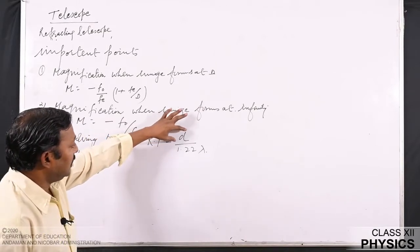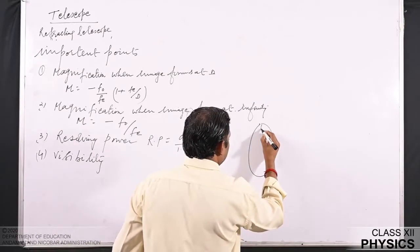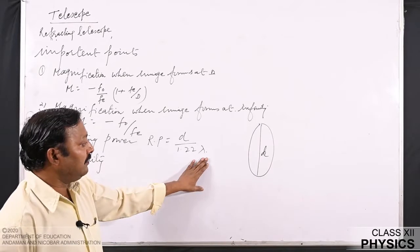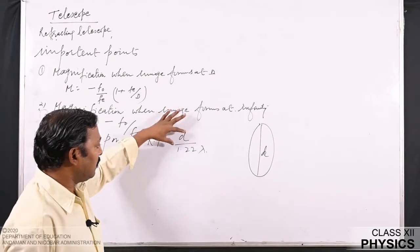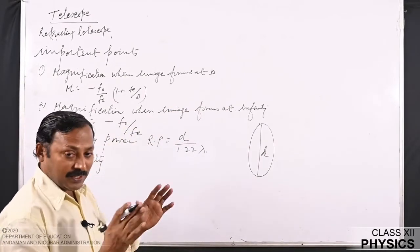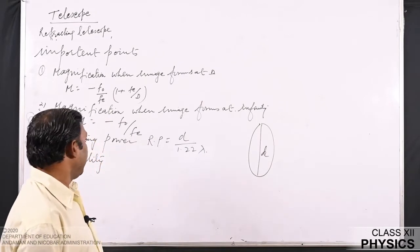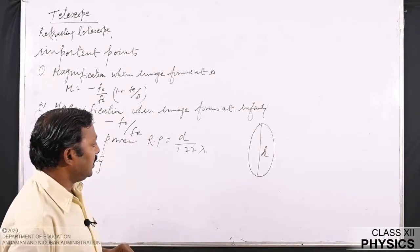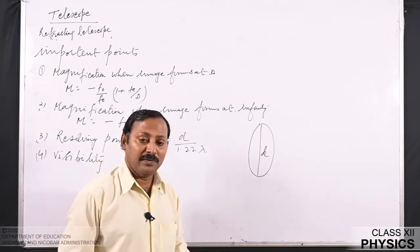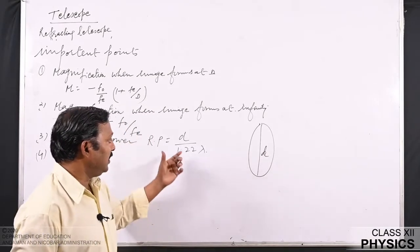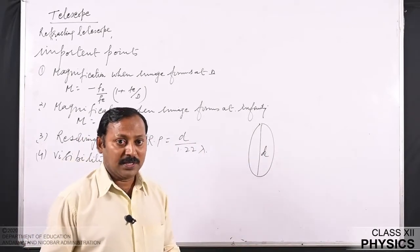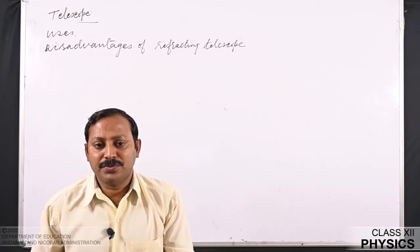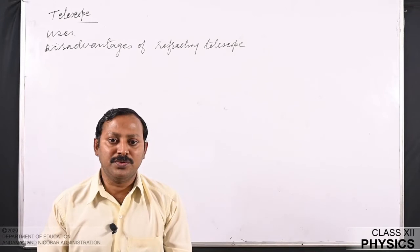The resolving power depends upon the aperture of the objective D and the wavelength of light used. Since we have no control over the wavelength, as light comes from celestial bodies, we have control only over the aperture. By increasing the aperture size of the objective, resolving power can be increased. More light-gathering capacity means more clarity. To increase visibility, the size of the lens must be increased. The telescope is used to see heavenly bodies and also objects on the earth's surface using terrestrial telescopes.